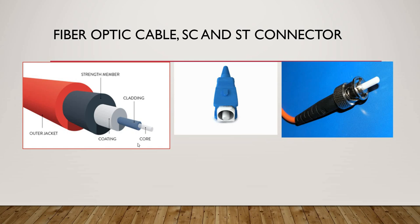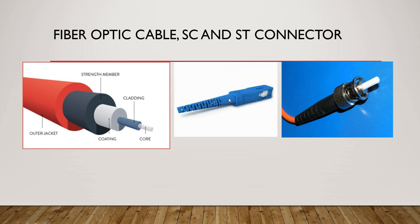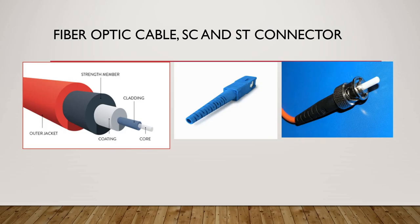Looking at the structure of fiber optic cable: the inner layer is the core, through which data is transmitted as light. The cladding surrounds the core and reflects the light signal back. After that comes the coating, then a strength membrane or outer jacket. The connectors used in fiber optic cable are the SC connector (Subscriber Connector) and the ST connector.